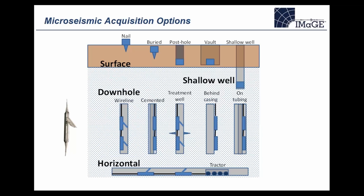With the starting point of defining objectives, the next step is to look at acquisition. This slide lays out different acquisition geometry options, broadly classified as surface or shallow-grid near-surface acquisition compared to downhole. The most common downhole option would be a wireline-deployed observation well, either vertical or horizontal. A common decision point is surface versus downhole monitoring.